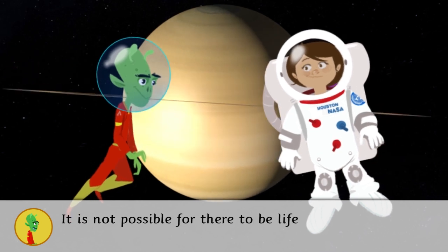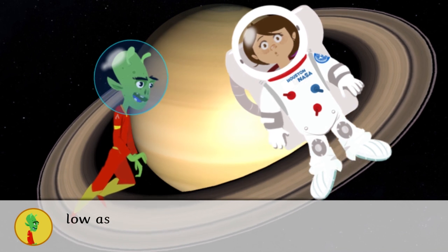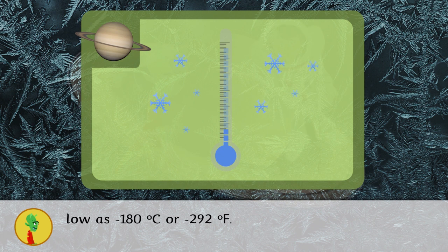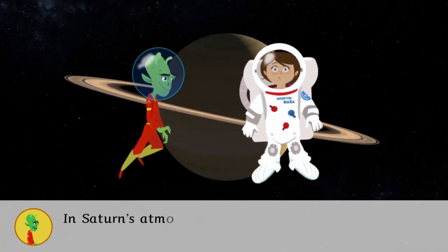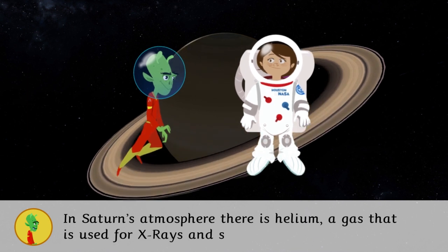It is not possible for there to be life on Saturn because the temperature is very low. It can get as low as minus 180 degrees or minus 292 Fahrenheit. In Saturn's atmosphere, there is helium, a gas that is used for X-rays and spaceships.